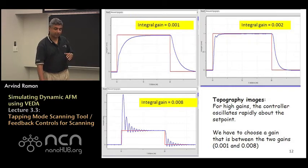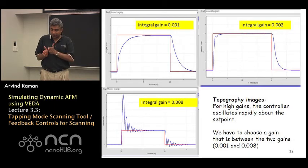And in red is the actual topography of the sample that was entered and the blue is the actual measured topography. And so you can see when your integral gain is very small when you hit the edge of the object for the first time there is a whole region where the controller is going through its transients.